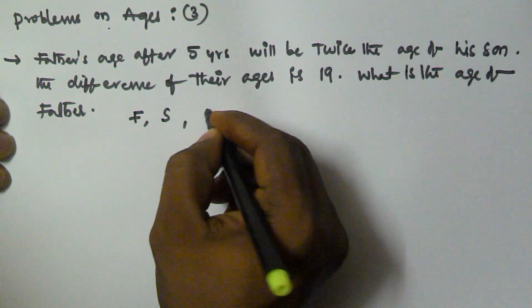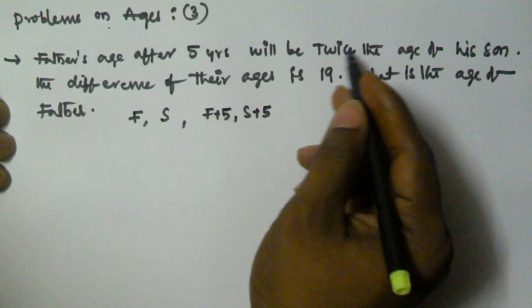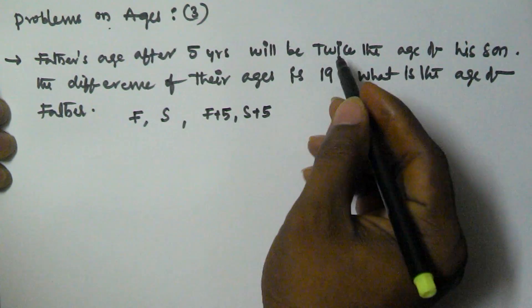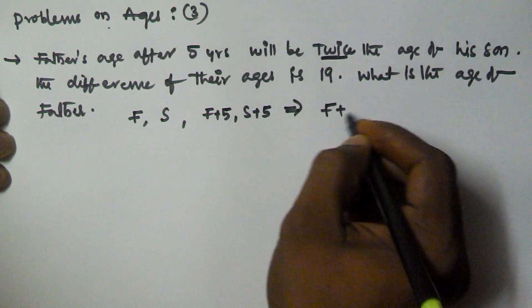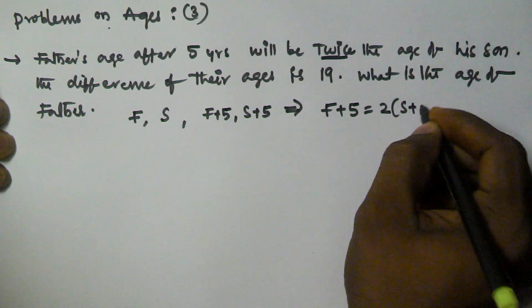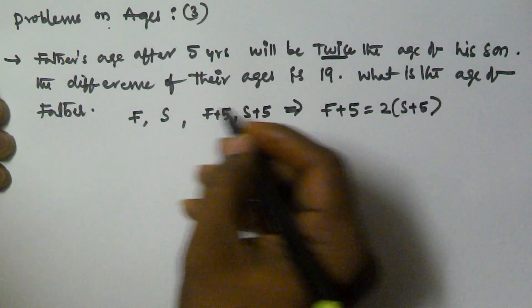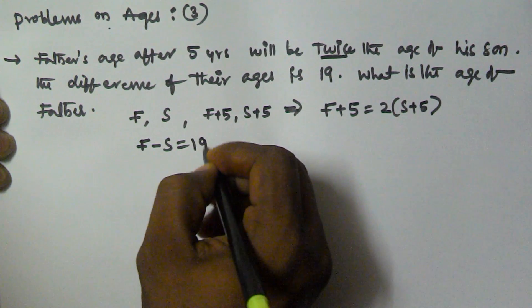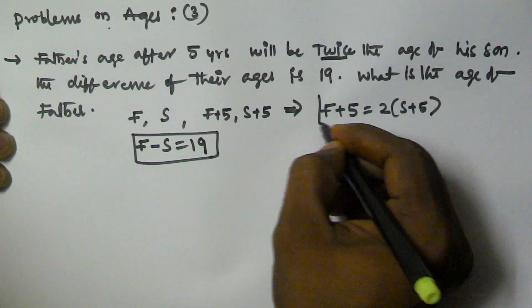Father's age after 5 years is f plus 5, and son's age after 5 years is s plus 5. Father's age after 5 years will be twice the age of his son, so f plus 5 is equal to 2 into s plus 5. The difference of their ages is 19, so f minus s is equal to 19. We have two equations.